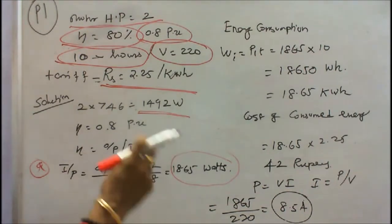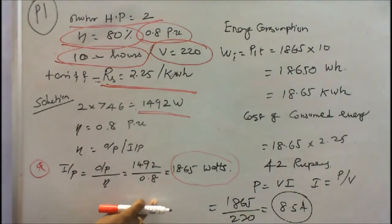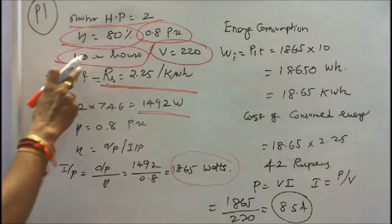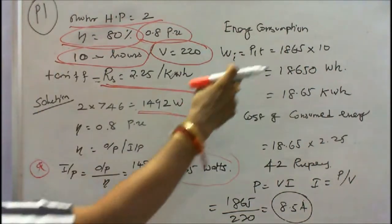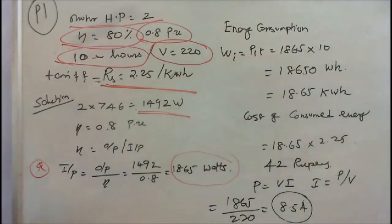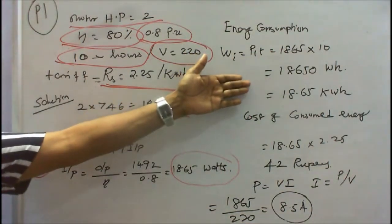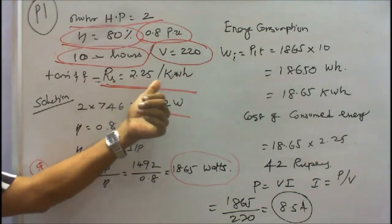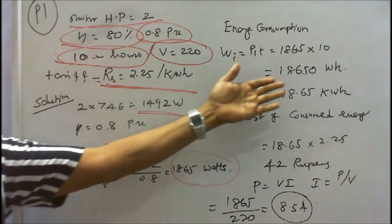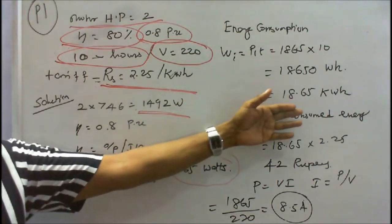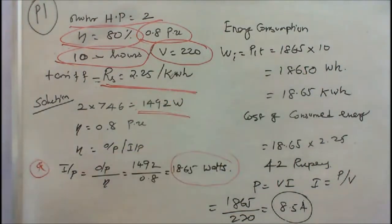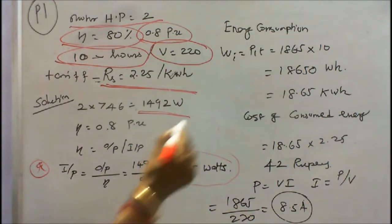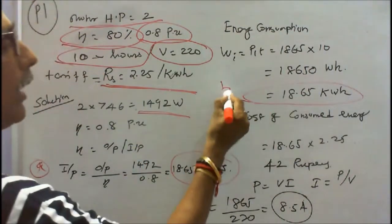Next is what is its energy consumption? So energy is whatever hours is given, 10. So 1865 into 10 equals 18650 watt-hours. In kilowatt-hours at Rs. 2.25 per kilowatt-hour, therefore we convert it to kilowatt-hour: 18.65 kilowatt-hour. This is the second answer, that is B.